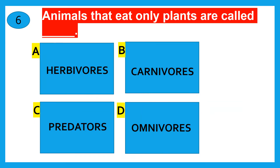Animals that eat only plants are called — herbivores, carnivores, predators, or omnivores? The correct answer is herbivores.